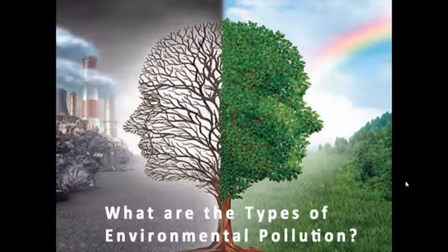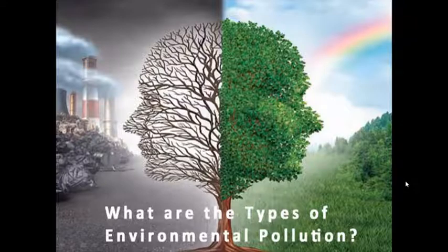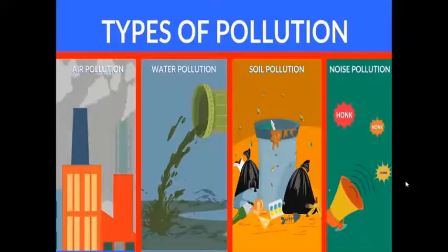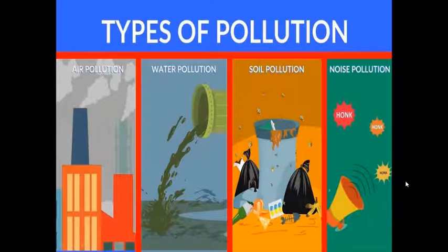Now, here we can see two parts — a polluted environment structure and an unpolluted one. The question is how we can convert a polluted environment into a pollution-free environment. This is what we need to keep in mind within green economy. Looking at types of pollution, first we have air pollution, which is caused by smoke coming out of factories.